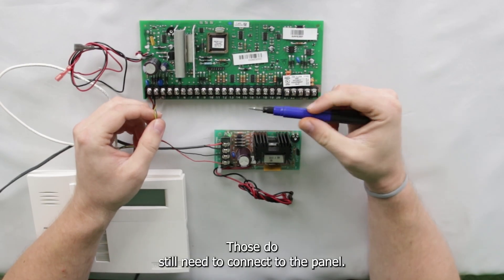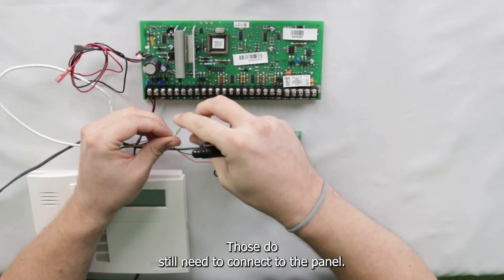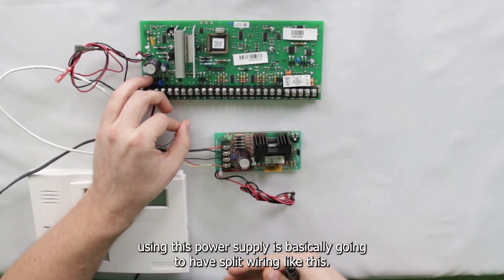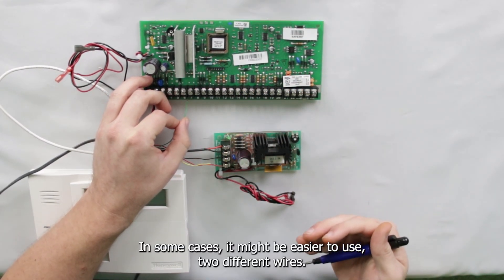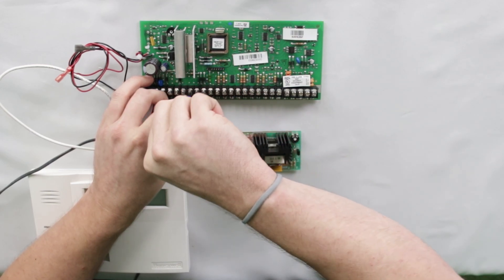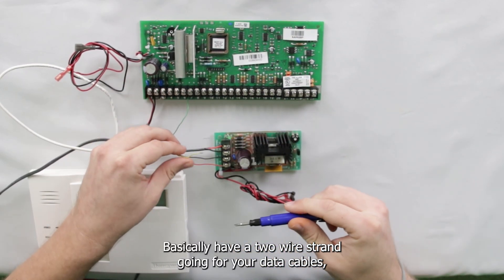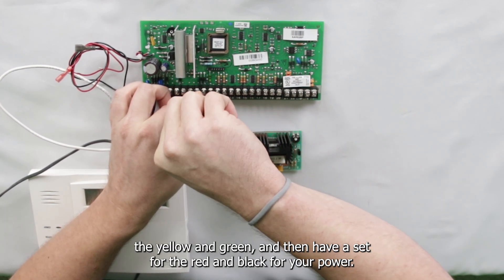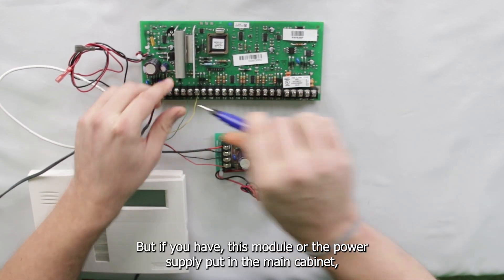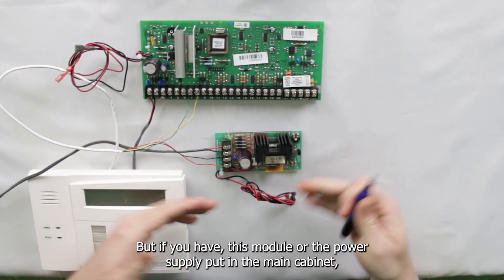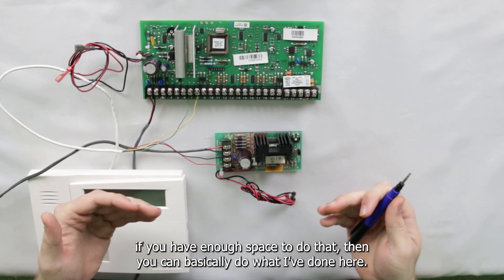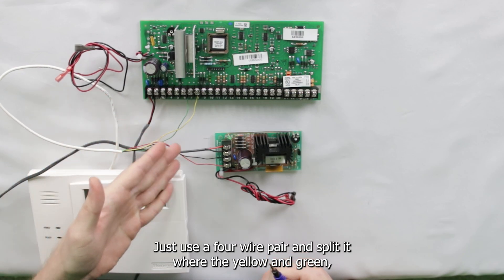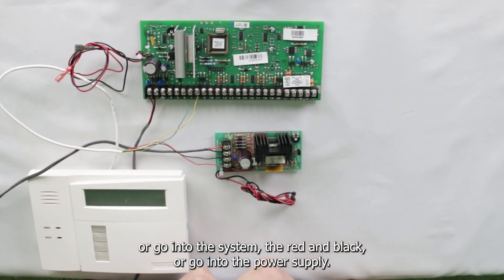Now your yellow and green wires, those do still need to connect to the panel. So any module you have powered using this power supply is basically going to have split wiring like this. In some cases, it might be easier to use two different wires, have a two-wire strand going for your data cables, the yellow and green, and then have a set for the red and black for your power. But if you have this module or the power supply put in the main cabinet, you can basically do what I've done here. Just use a four-wire pair and split it where the yellow and green are going to the system, the red and black are going to the power supply.